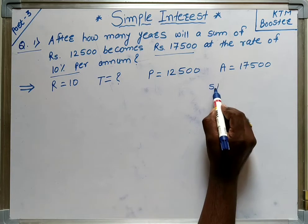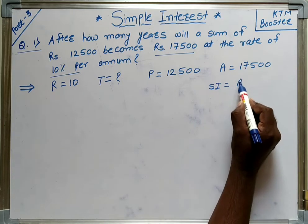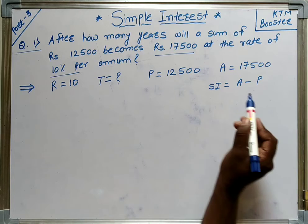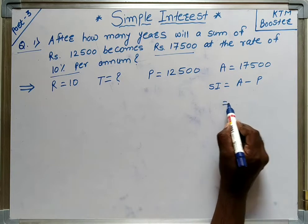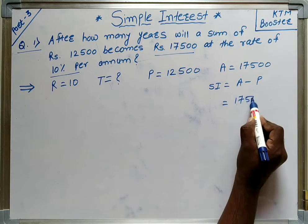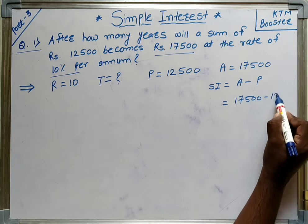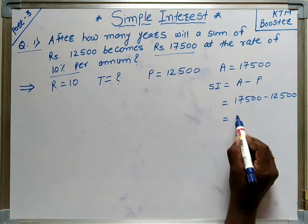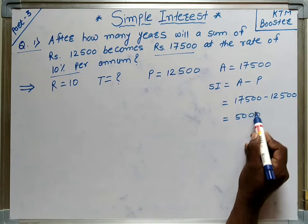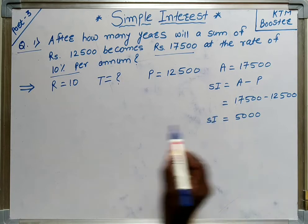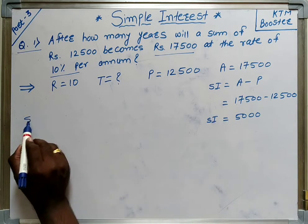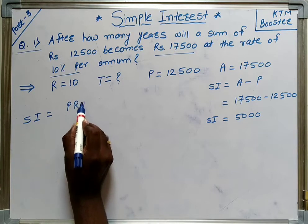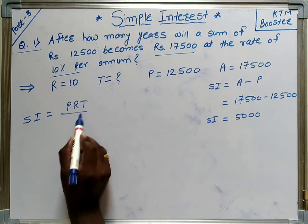What is SI? SI is amount minus principal, as discussed in part 1 and part 2. So 17,500 minus 12,500 gives us SI equal to 5,000 rupees. We know the formula for SI, that is P into R into T divided by 100.